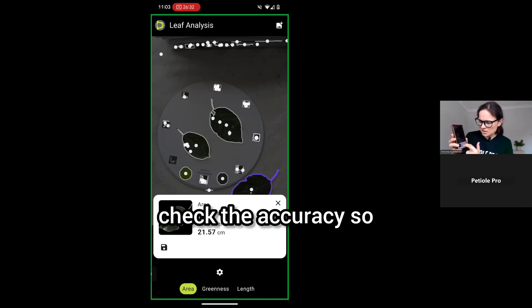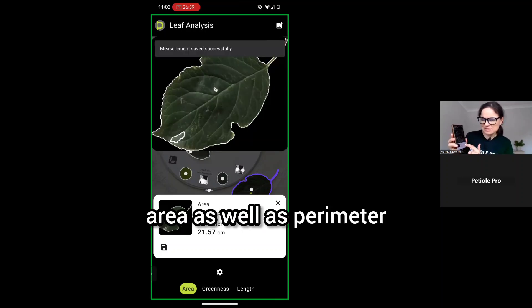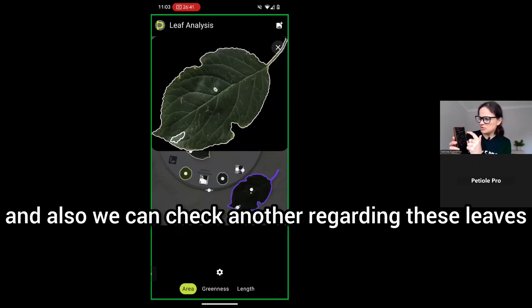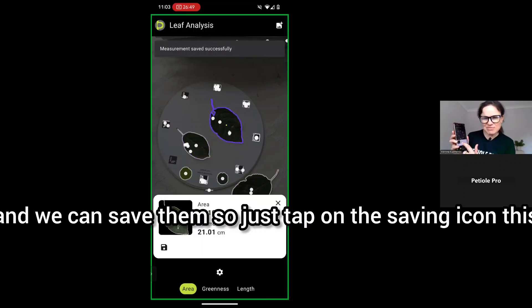Here we can see the size, area, as well as perimeter. Also we can check another regarding these leaves which we have already measured and we can save them. Just tap on the saving icon below the small thumbnail.